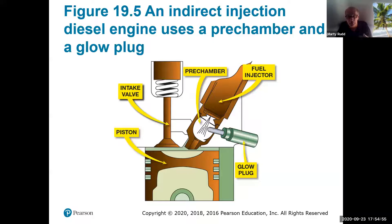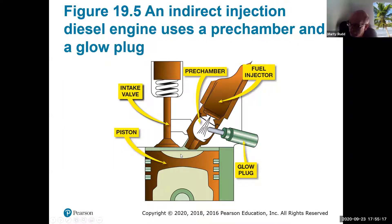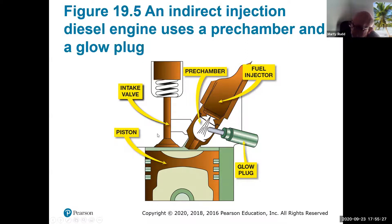This particular one heats up the pre-chamber, which is one style of injection. We spray a fairly rich mixture into the pre-chamber, and that leads over to the combustion chamber below. Here's your pre-chamber, and this is the combustion chamber down here where the bigger explosions happen and slam that piston down. We also have an intake valve and an exhaust valve.